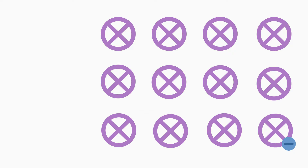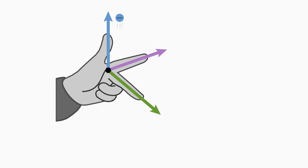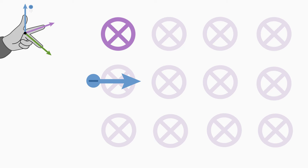Let's first learn how to determine in which direction the electron is deflected. For this, we use the so-called left-hand rule. The thumb points in the direction of the movement, that is to the right; the index finger points in the direction of the magnetic field, that is into the screen; and the middle finger points downwards in this case, indicating the direction of the Lorentz force. The electron is deflected downwards.